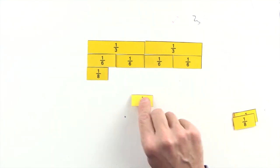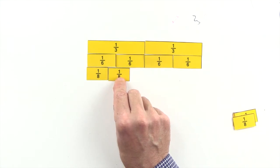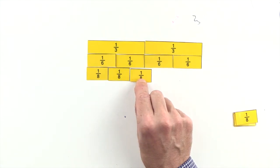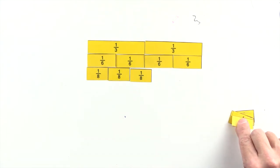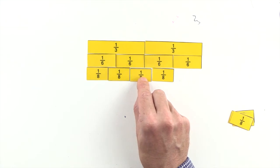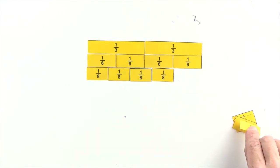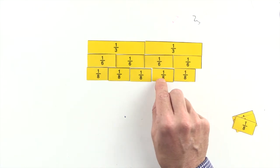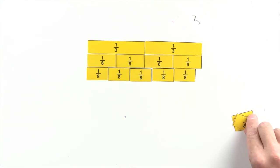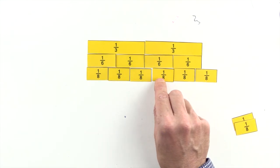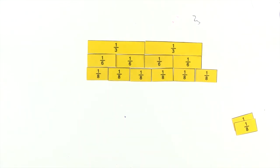5 eighths are less than 2 thirds, and 6 eighths are greater than 2 thirds. So we can't use eighths to make an equivalent fraction to 2 thirds.